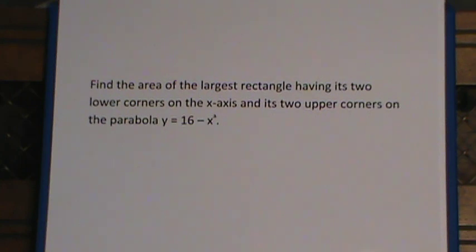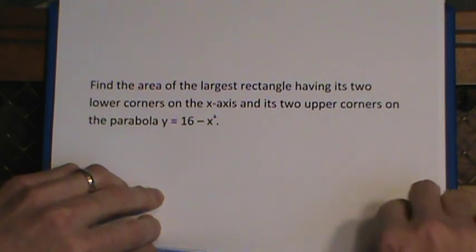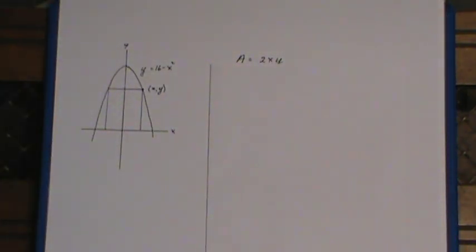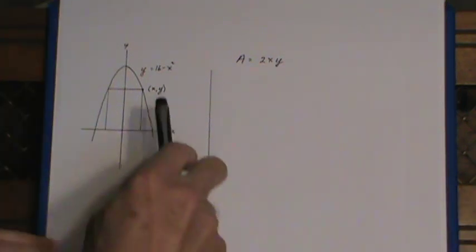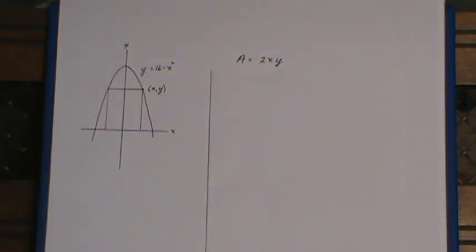Finally, finding the area of the largest rectangle with two corners on the x-axis, and the upper two corners on this parabola. Now, that's an easy parabola to draw. It's got its vertex 0,16. It's just your normal y equals x squared turned upside down and moved up 16 units.